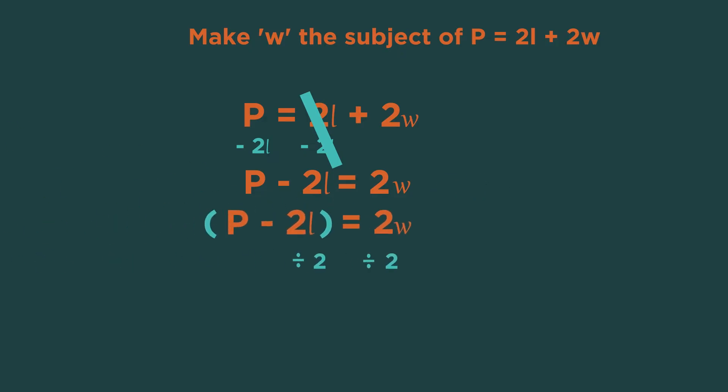We need to divide both sides by 2. So divide the whole of this side by 2. These 2's cancel each other out, leaving W as the subject.